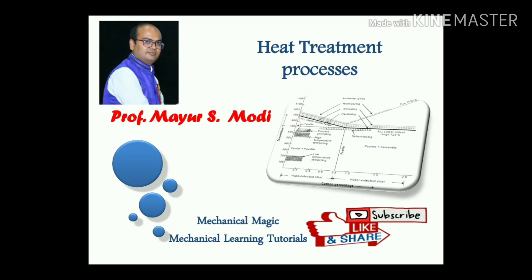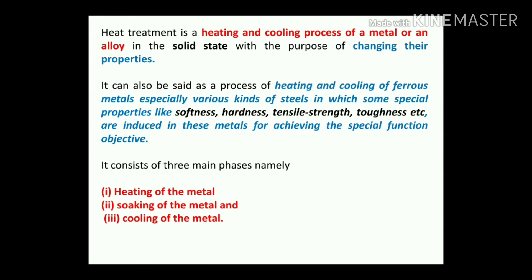Today we will be discussing the heat treatment processes of steel. Basically, heat treatment processes of steel are used to enhance or increase the mechanical properties of materials. Heat treatment is a heating and cooling process of a metal or an alloy in the solid state with the purpose of changing their properties.